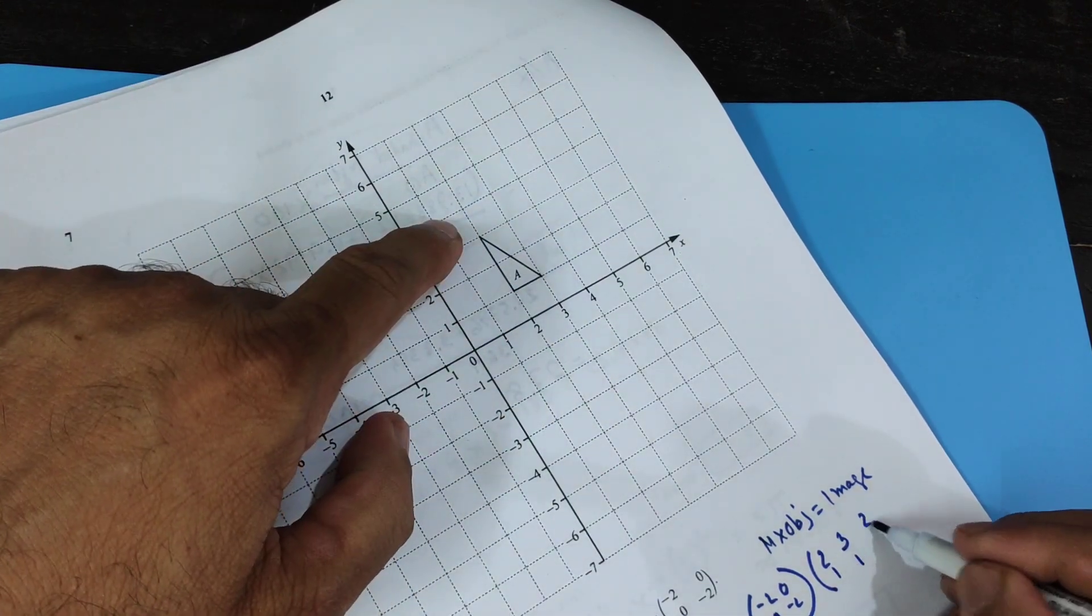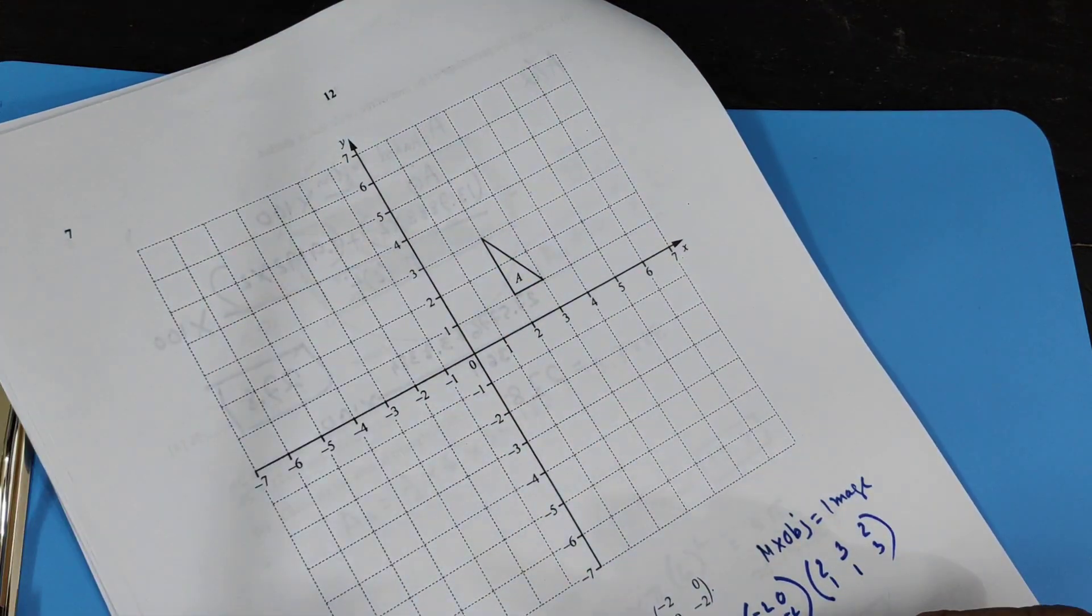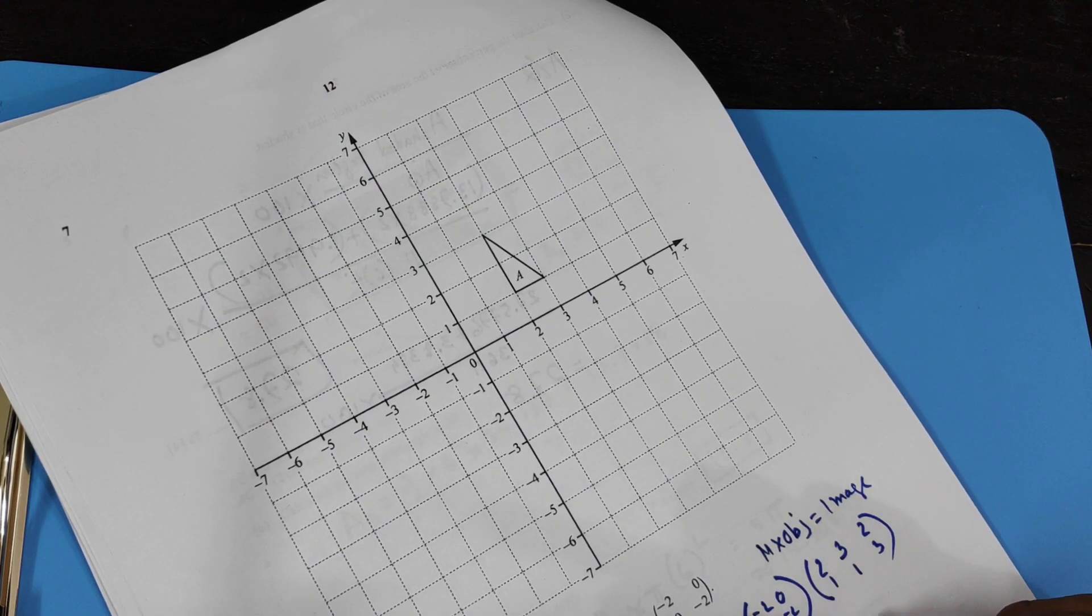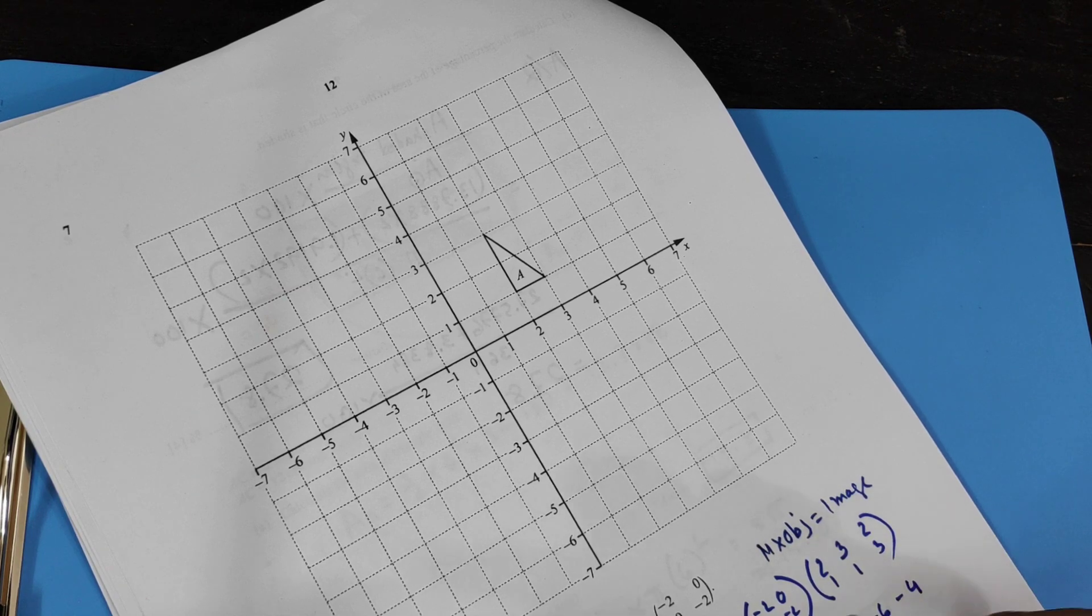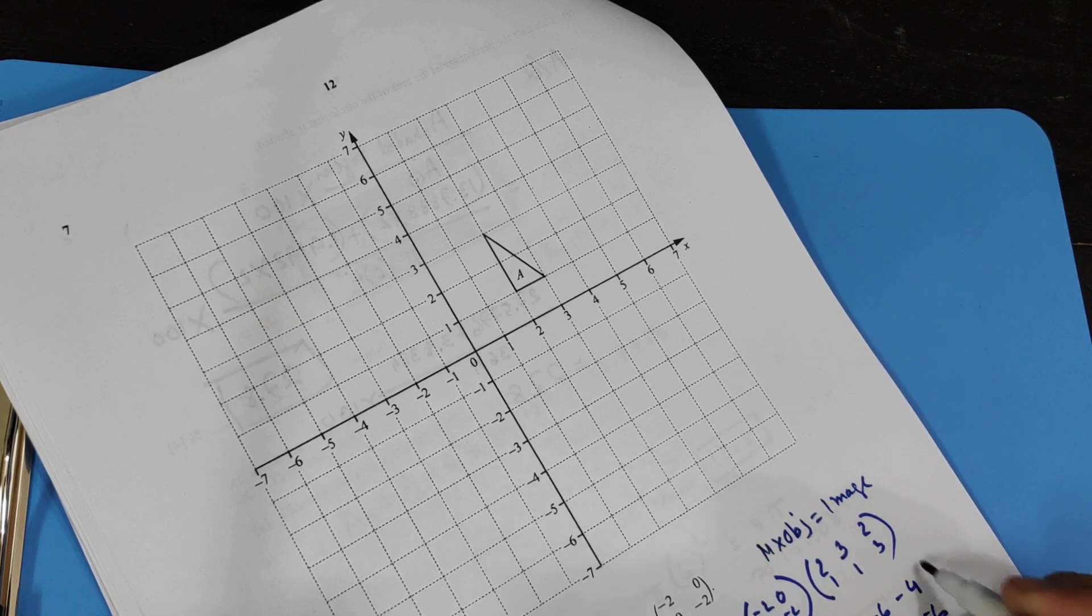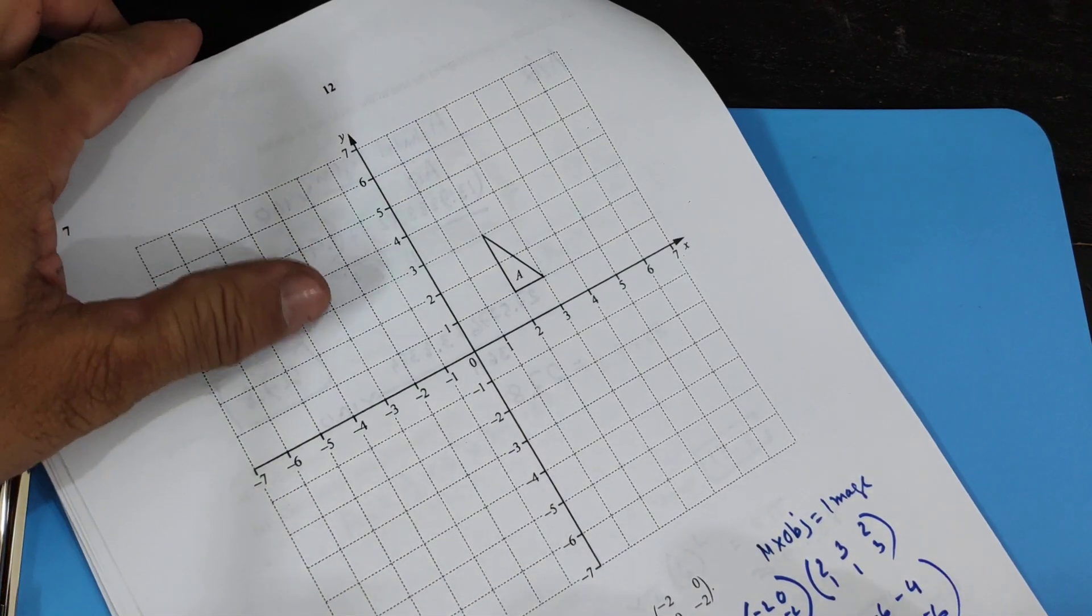So when you multiply that, minus two times two is minus four, and this is zero, minus four. Same thing, minus six, and that's minus four. And zero times two plus minus two, so that's minus two, minus two, minus six. So this is the image of triangle B.